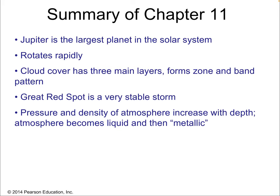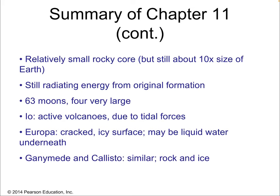In summary: Jupiter is the largest planet in the solar system by far, rotating in only about nine Earth hours. Its cloud cover has three main layers forming zones and a belt pattern. The Great Red Spot is a very stable storm lasting at least 300 years. Pressure and density of the atmosphere increase with depth, eventually becoming liquid and then metallic hydrogen. The rocky core, though small relative to all the hydrogen, is still about 10 times bigger than Earth, and Jupiter is still radiating energy from its original formation. It has 63 moons — four large ones: Io famous for its tidal-force-driven volcanoes; Europa with its cracked icy surface and liquid water underneath; and Ganymede and Callisto, rocky worlds with lots of ice.